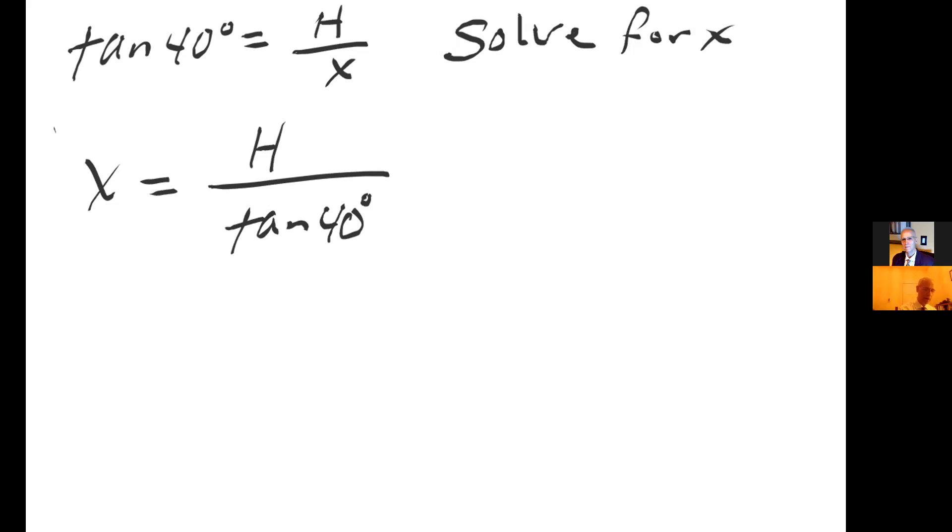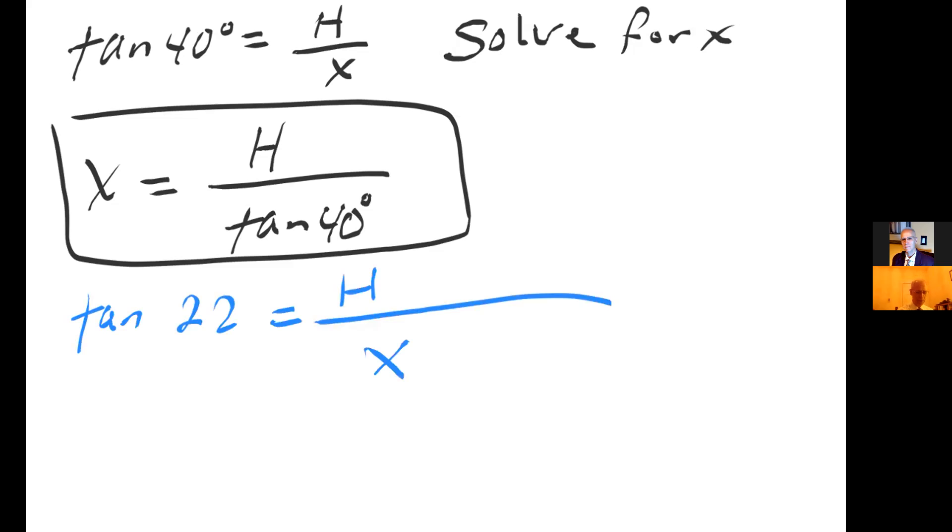And now, in equation one, I had tangent of 22 equals height over x plus 500. So now I'm going to, instead of this x right here, substitute this one, which is H over tangent of 40 degrees.